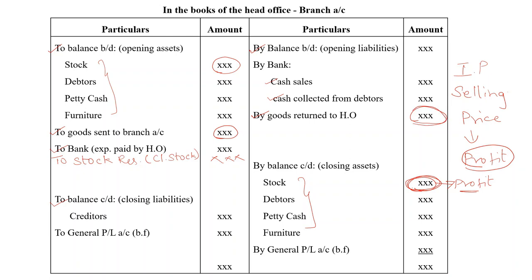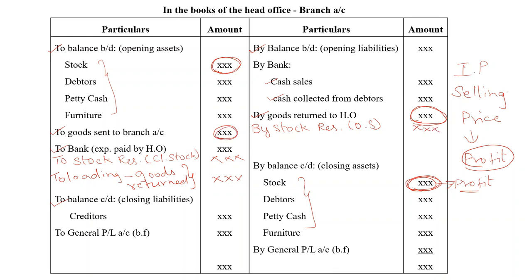For goods returned to head office — also on the credit side — we debit loading on goods returned to eliminate the profit portion, and write the amount in the amount column. For opening stock, which is on the debit side, to remove the profit we give a credit by stock reserve, and write the amount. Similarly, for goods sent to branch we give a credit by loading on goods sent to branch, and write the amount in the amount column. These are the additional entries for the invoice price method.